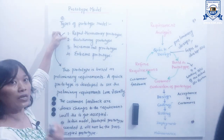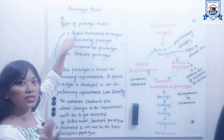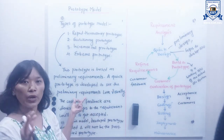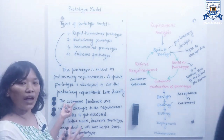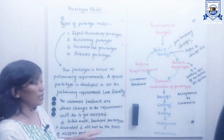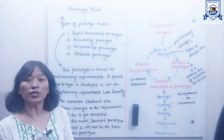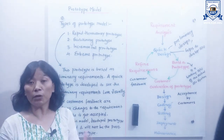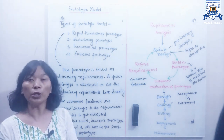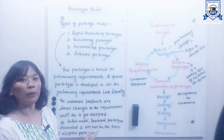A rapid throwaway prototype is based on preliminary requirements. As the name suggests, a quick prototype is developed to see how preliminary requirements will look visually. Customer feedback and suggestions then drive changes to the requirements until the prototype gets accepted. In this model, the developed prototype is discarded and will not be part of the accepted prototype — every time there is feedback, a new prototype is created and the old one gets discarded. That is why it is called rapid throwaway prototype.